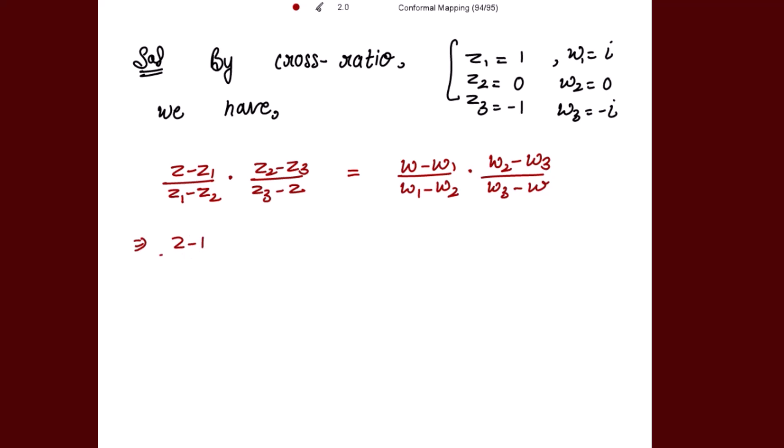We get (z - 1) divided by (1 - 0) into (0 - (-1)) over (-1 - z), equal to (w - iota) over (iota - 0) into (0 - (-iota)) over (-iota - w).